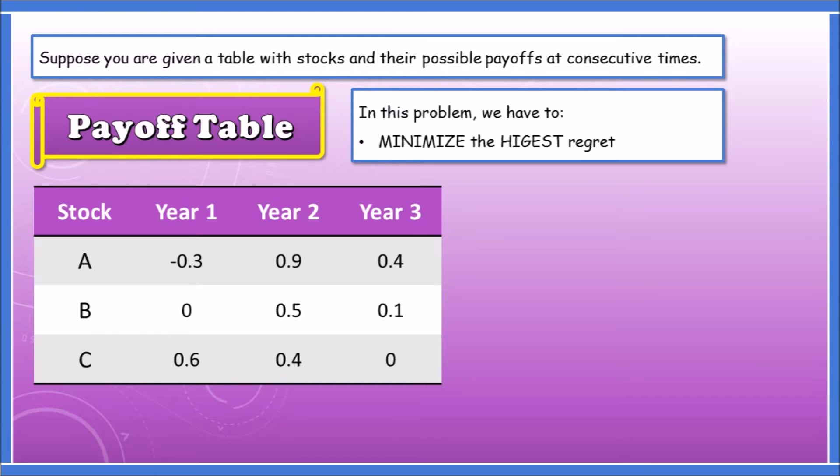I already made a step-by-step guide. Step 1: We should find the highest payoff in each year. Let's look at Year 1. We can see that the largest number there is 0.6, and then Year 2 is 0.9, and Year 3 is 0.4. I shaded it in orange. So what do we do from here?